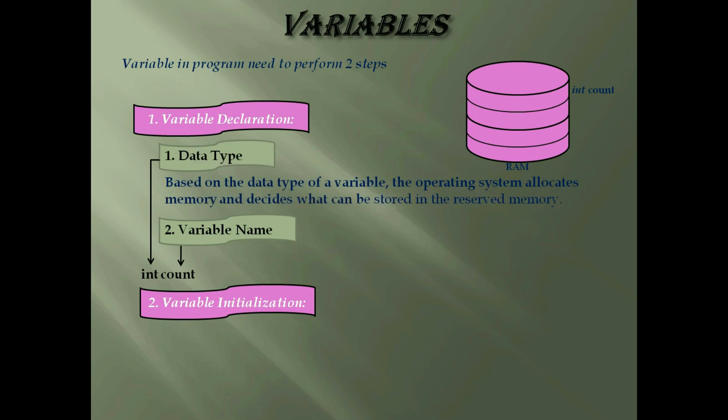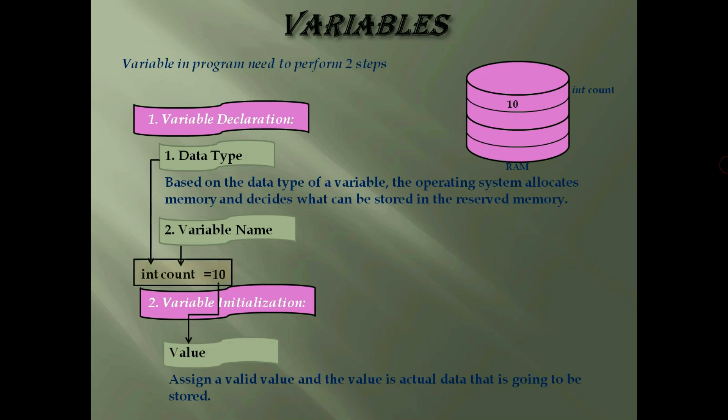Then, based on the data type of a variable, the operating system allocates memory and decides what can be stored in the reserved memory. Therefore, by assigning different data types of variables, you can store integers, decimals or characters in these variables. And in variable initialization, you must assign it a valid value. The value is the actual data that is going to be stored. A particular variable can only store one type of information. Here variable name count is holding an integer type value 10.